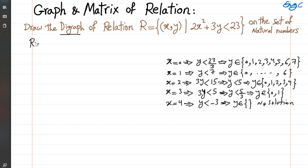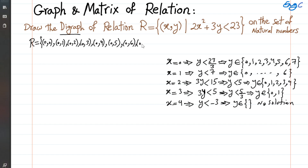The relation R is a set that contains: when x is 0, y can be 0, 1, 2, 3, up to 7. So we have the pairs (0,0), (0,1), (0,2), (0,3), (0,4), (0,5), (0,6), and (0,7). The first element of each two-tuple is x and the second is y, so with x=0 we get all those pairs.